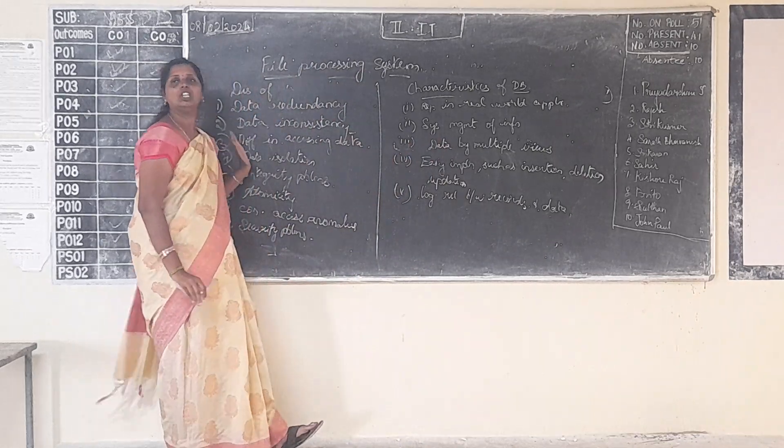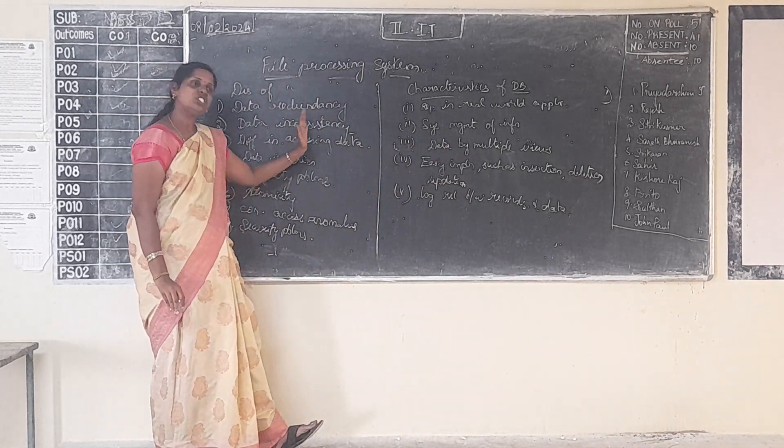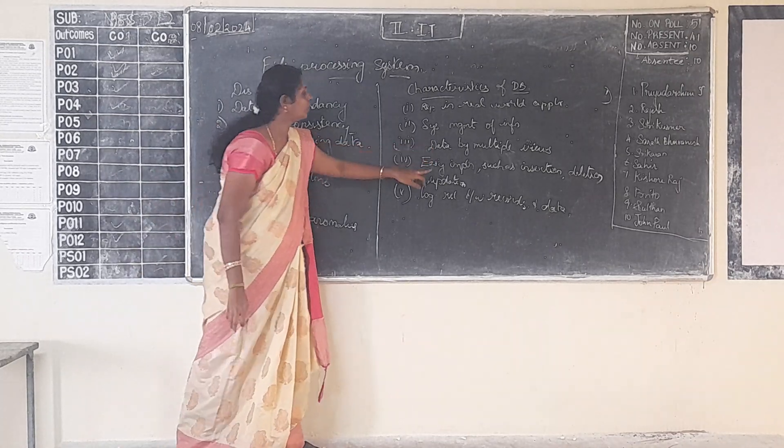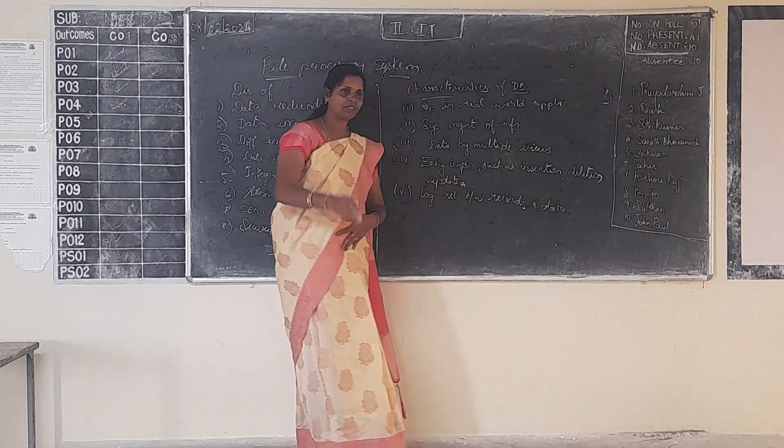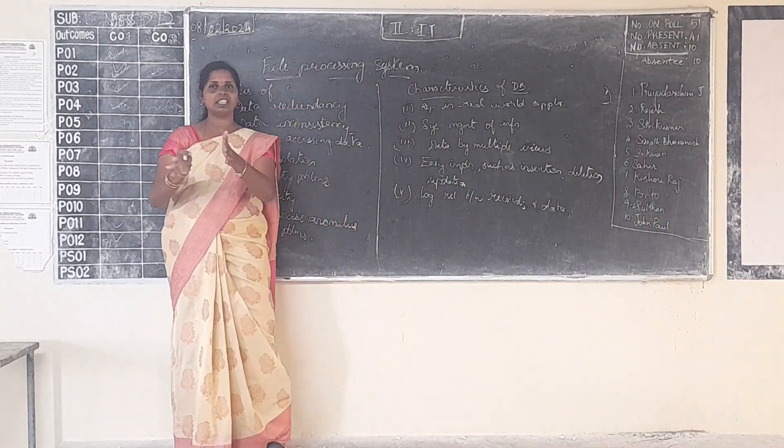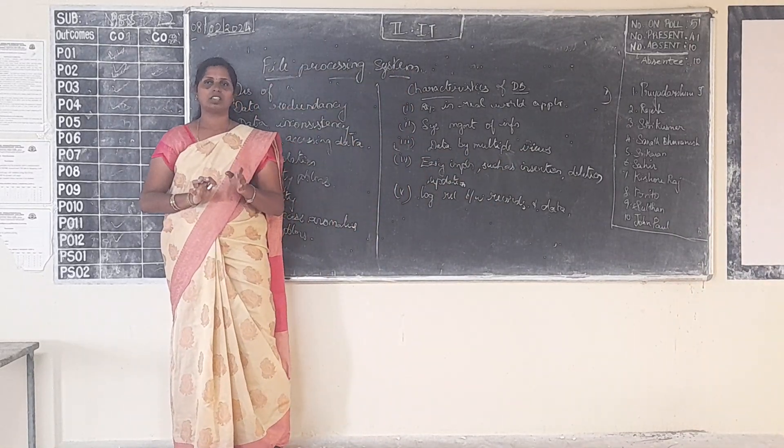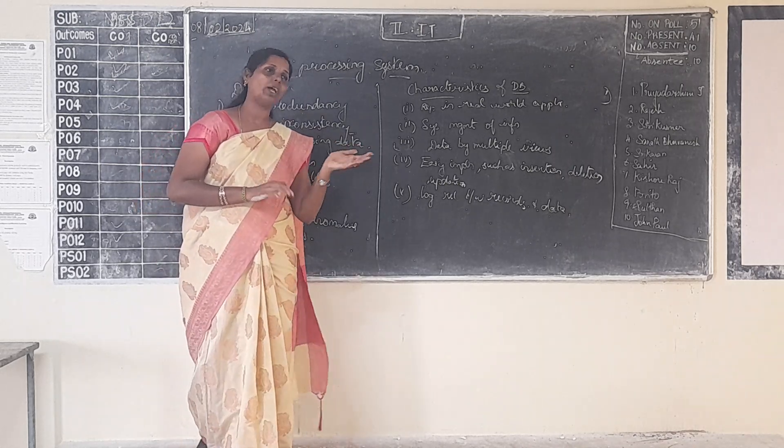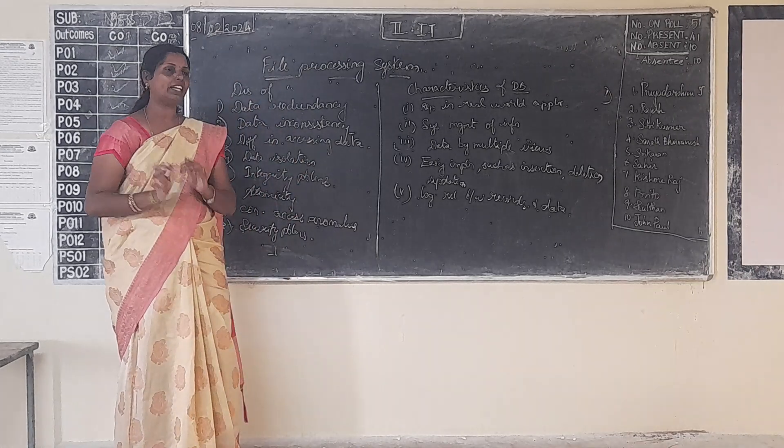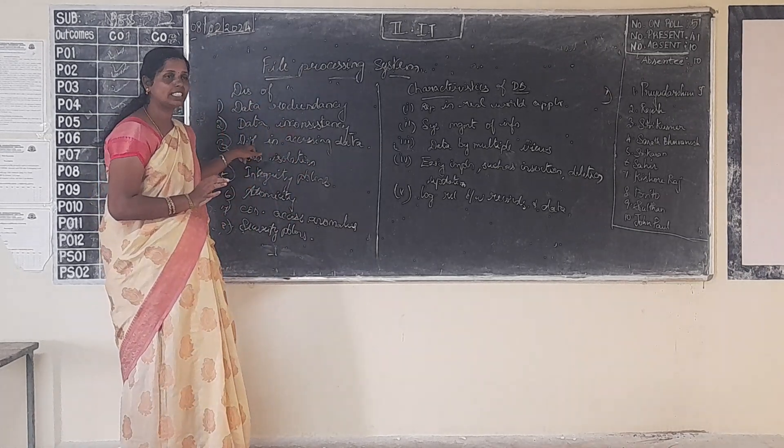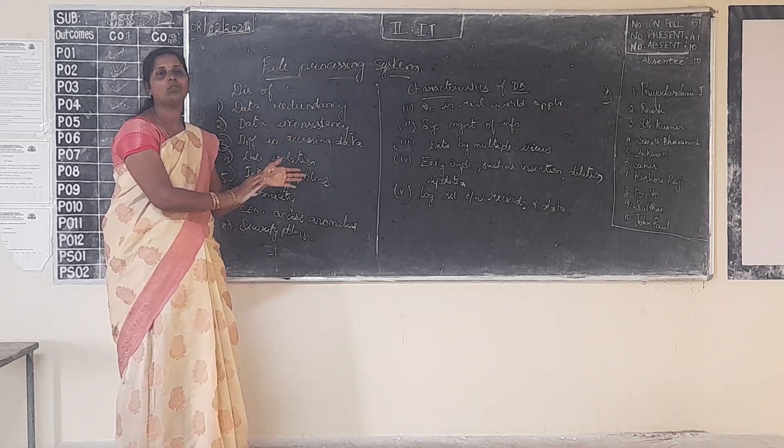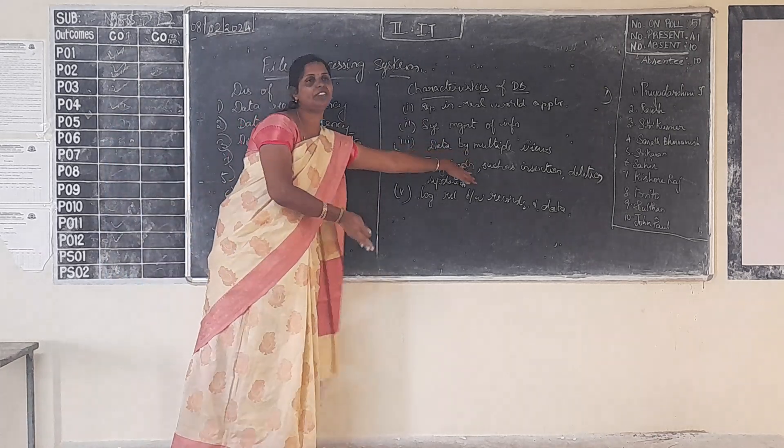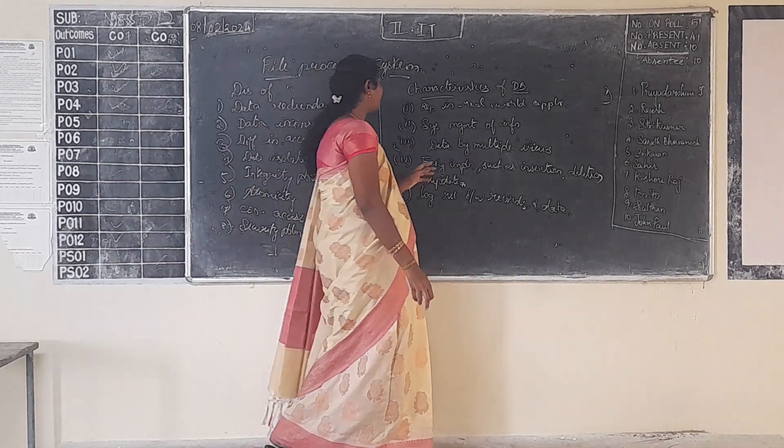Whereas here, for file processing, we can't do that. We have to change the entire file or store another file. Whereas it needs only just updating alone. Data by multiple users. If you are in a railway reservation, one person is seeing that? No. Many persons are seeing. Even if he is seeing, myself and other. Multiple persons can be seeing that. But if there is a virus in file processing system, it will be stored in single system, and it can be seen only by single user. That is also an advantage.